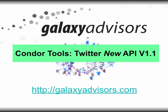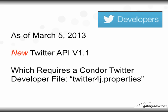Hello and welcome to Galaxy Advisors. The purpose of this video is to explain how to use the Condor new Twitter form, which is using the Twitter new API version 1.1. As of March 5th 2013, Twitter changed their API to version 1.1, which now requires a Condor Twitter developer file called Twitter4j.properties — all of which I'm going to explain how to construct so that you can use the new Twitter API within Condor.